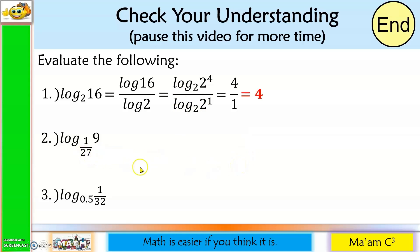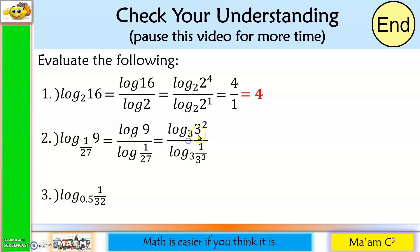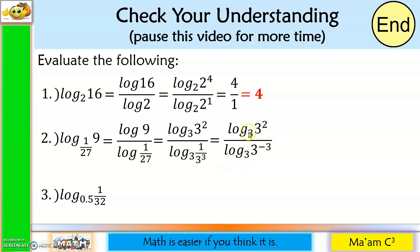This one will become the logarithm of 9 over the logarithm of 1 over 27. I'll express 9 as 3 squared to the base 3, and 27 is 3 cubed. Bringing this up, the exponent becomes negative. The answer in the numerator is 2, and in my denominator the answer is negative 3. So I have negative 2 over 3.